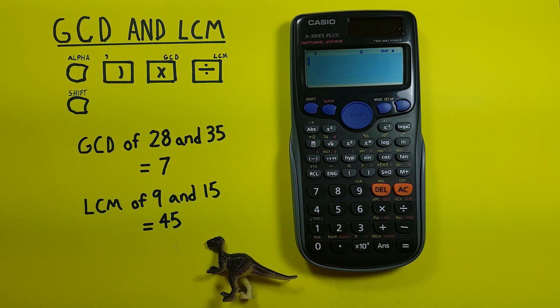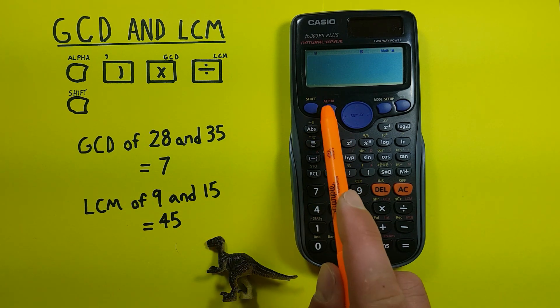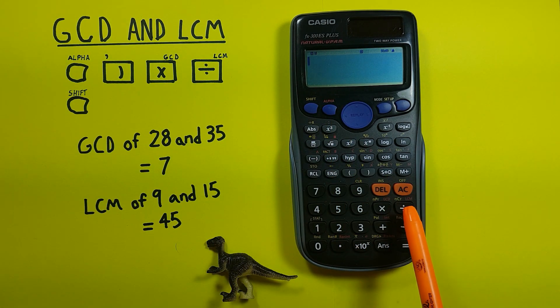Alright for our second option or our second function rather we have LCM or least common multiple. Let's say we wanted to find the LCM of 9 and 15. We do this with the alpha and then division key.